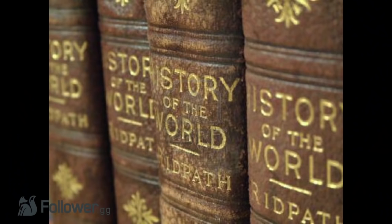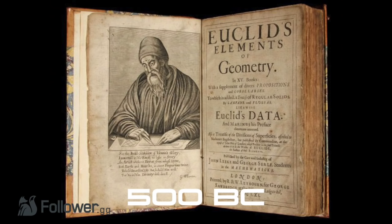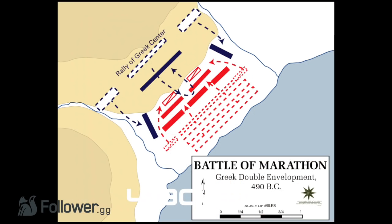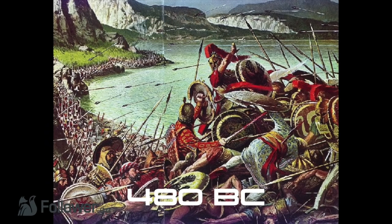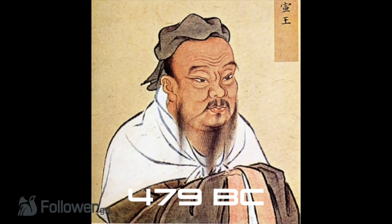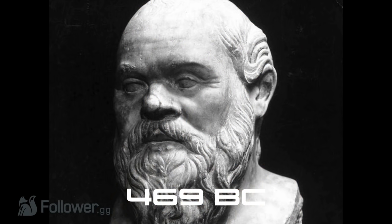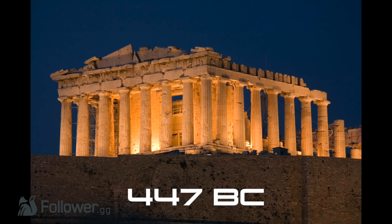Some key events that happened in our history during that lifetime: Euclid finishes his book Elements, a mathematical and geometric treatise consisting of thirteen books attributed to the ancient Greek mathematician. Greek city-states defeat the Persian invasion at the Battle of Marathon. Buddha passes away. Persian invasion of Greece by Xerxes, the Battle of Thermopylae and Salamis. Confucius passes away. The birth of Socrates. The Greco-Persian war ends.